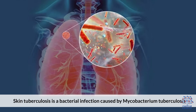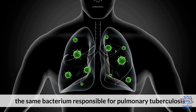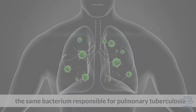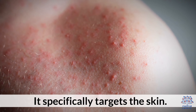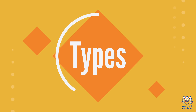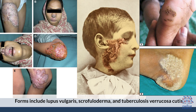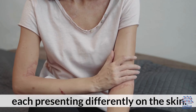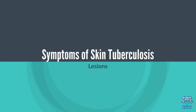What is Skin Tuberculosis? Skin tuberculosis is a bacterial infection caused by Mycobacterium tuberculosis, the same bacterium responsible for pulmonary tuberculosis. It specifically targets the skin. Types include Lupus vulgaris, Scrofuloderma, Tuberculosis Verrucosa Cutis, each presenting differently on the skin.